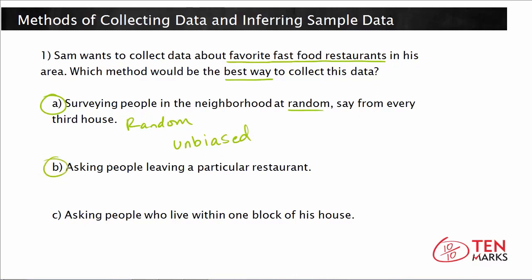What if Sam asks people leaving a particular restaurant? They're already leaving a particular restaurant, so you can assume they probably like that restaurant — this becomes a biased sample. It could also be biased in the other direction: maybe they went to this restaurant and didn't like it, so they're more likely to say this isn't what they like. But if a person is leaving a pizza place, they probably like pizza. So it won't represent the best choices of the entire neighborhood to survey people leaving a particular restaurant.